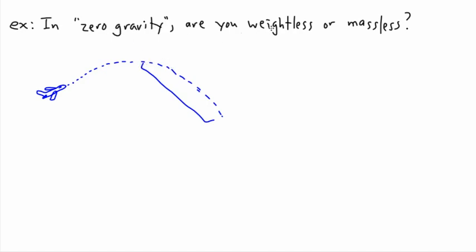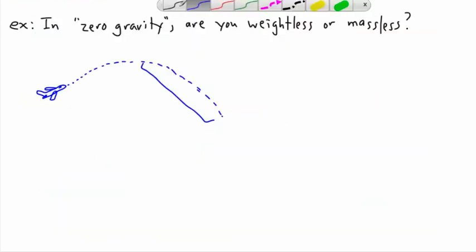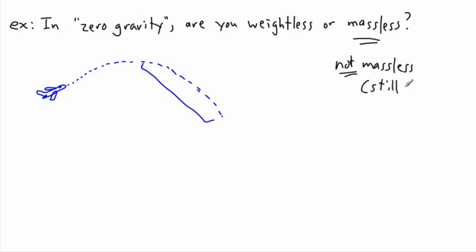But now the question is in zero gravity, are you weightless or are you massless? Well, if we go back to the definition of mass, mass is how much stuff there is. So if you're in zero gravity, does that mean that you have no mass? No, not at all. So in this case, you're not massless. You can't be massless because you still have stuff. You're still made of stuff. You don't stop existing if you're feeling what we call zero gravity. So you're not massless. That means you must be weightless. So you are weightless.